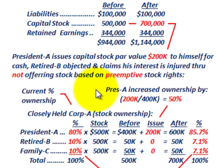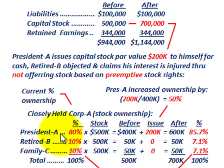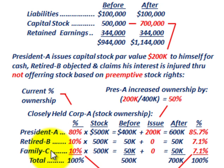Let's look at our closely held Corporation A and the stock ownership breakdown. The president owns 80% of the stock in the company. The remaining amount is split between a retired shareholder B, who owns 10%, and some family members identified as C that own the other 10%. That accounts for 100% of the stock held by this closely held company.